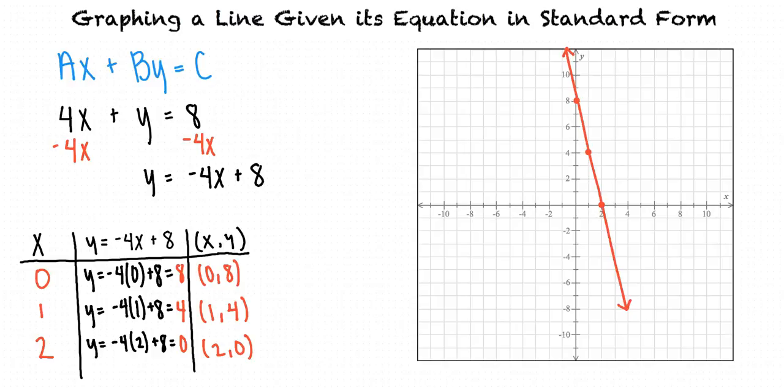Great work! So to summarize, when graphing a line given its equation in standard form, we first solve the equation for y. Next, we evaluate the equation for various values of x to determine a few ordered pairs that lie on the graph. Then, using these points, we can graph our line. That sounds great. It seems like you're getting the hang of this topic.